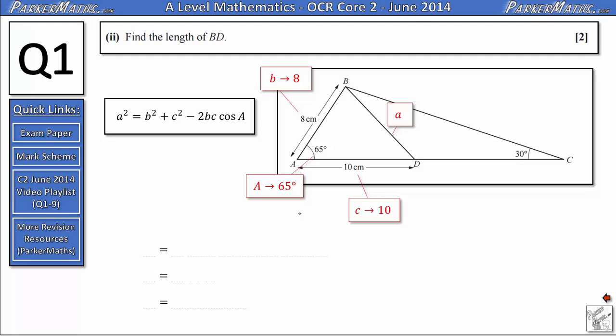Again all we need to do now is substitute these numbers into the formula. So we get A squared equals B squared plus C squared. That becomes 8 squared plus 10 squared minus 2 lots of BC. So that's 2 times 8 times 10 multiplied by cosine A so cosine 65.